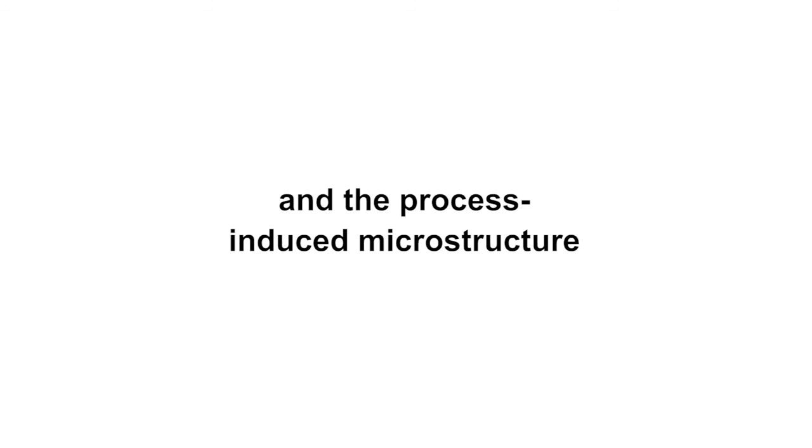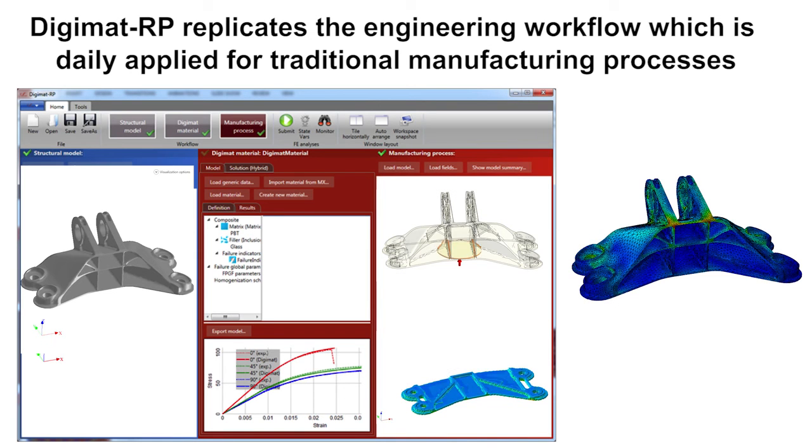Digimat RP is the state-of-the-art technology in performing strongly coupled process-to-structure analyses for traditional manufacturing processes such as injection molding. Following the same philosophy, Digimat RP has been extended to replicate the successful engineering workflow for additive manufacturing.